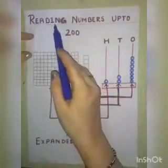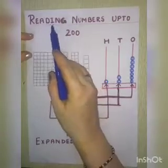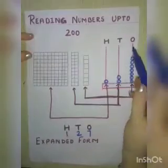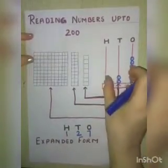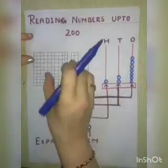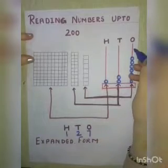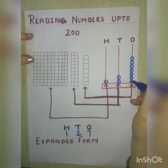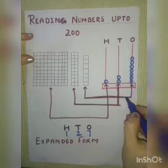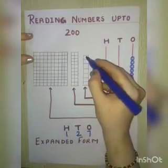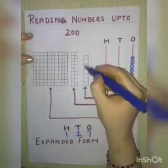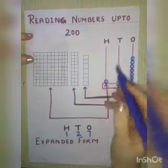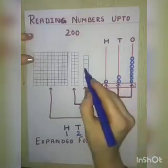Students, from today onwards we are going to start a new heading: reading numbers up to 200. Here I have drawn one abacus and I have related this abacus with the blocks. In the 1st place we are having 7 beads, and if I relate with this building, in this building we are having 7 blocks. 7 beads, 7 blocks.